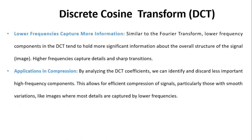Lower frequency components in the DCT tend to hold more significant information about the overall structure of the image. Higher frequencies capture detail and sharp transitions like edges. Its main application is in compression: by analyzing the DCT coefficients, we can identify and discard less important high-frequency components, allowing for efficient compression of signals.